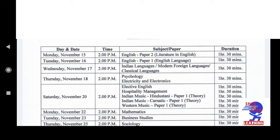Now we have the timetable for Class 12. This also starts on November 15th, but the time is 2 p.m. The first paper is English Paper 2, i.e., Literature. Duration is 1 and a half hours. Next exam is on November 16th at 2 p.m. — subject is English Paper 1, i.e., English Language and Grammar. Duration is 1 and a half hours.